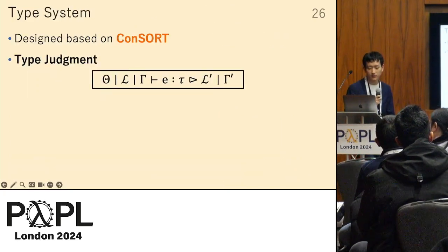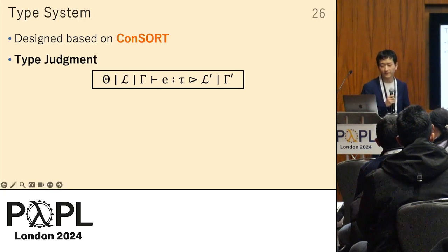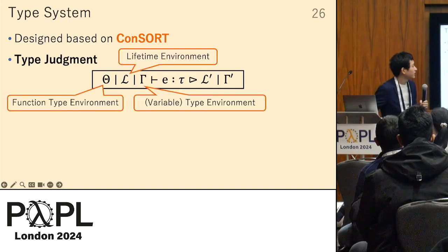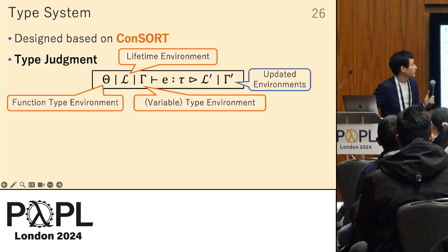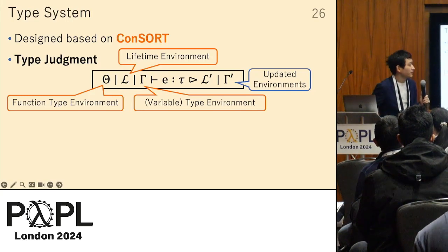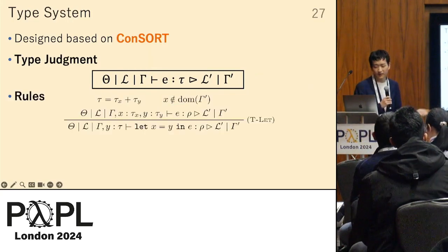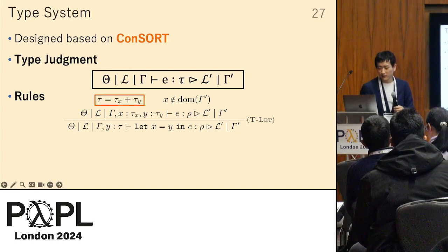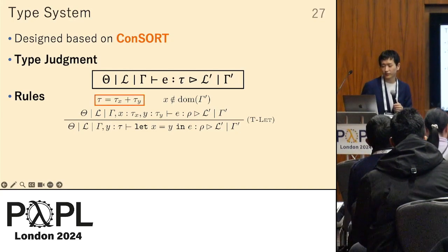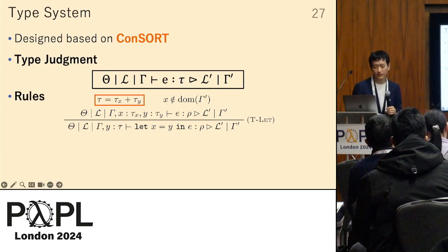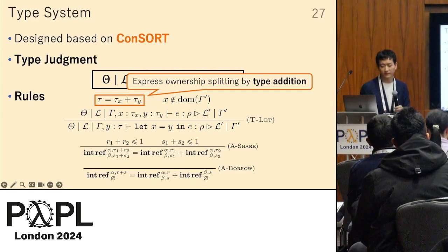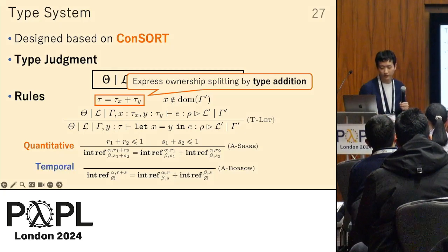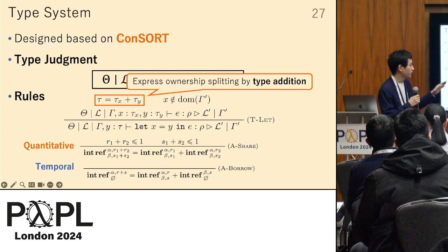We designed our type system based on Consort. The type judgment has three typing contexts and two updated environments, since our type system is flow-sensitive. A representative typing rule for the let statement expresses ownership sharing as type addition. The definition of type addition mainly consists of two rules: one expresses quantitative sharing of ownership and the other shows temporal sharing of ownership.